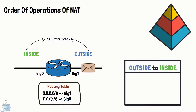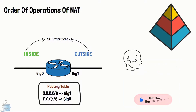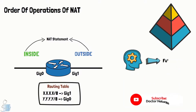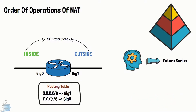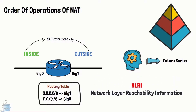Now when the packet is coming from an outside NAT interface, NAT occurs first, and then routing is performed. You need to understand the importance of routing when it comes to NAT — that means the NLRI, or network layer reachability information, must be complete from the perspective of the NAT boundary router for NAT to trigger and function properly.